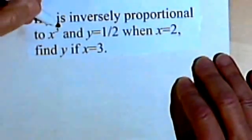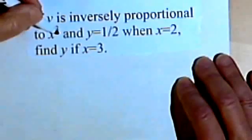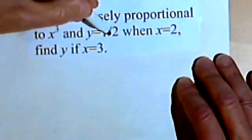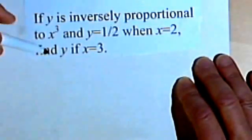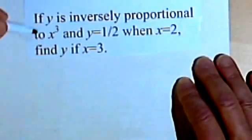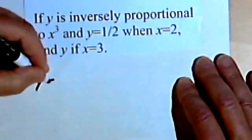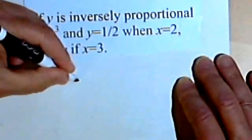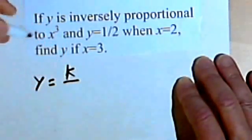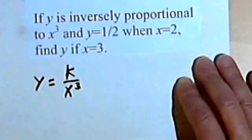If y is inversely proportional to x cubed, and y equals 1 half when x equals 2, find y if x equals 3. Okay, so y is inversely proportional to, not to x, but to x cubed, so x to the third.